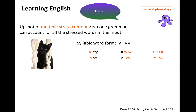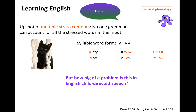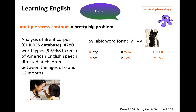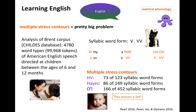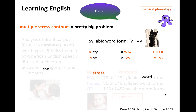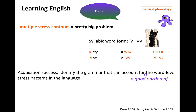No single grammar can account for all the stressed words in the input — you have to deal with the fact that there are exceptions. We did an analysis on a corpus of American English child-directed speech for children aged 6 to 12 months. It turns out this happens a lot: depending on the representation used, 73 of 123, 86 of 149, or 166 of 452 syllabic word forms have multiple stress contours — over half or over a third. So you may need to adjust your acquisition goals to identify a grammar that accounts for a good portion of word-level stress patterns, because you can't handle them all.